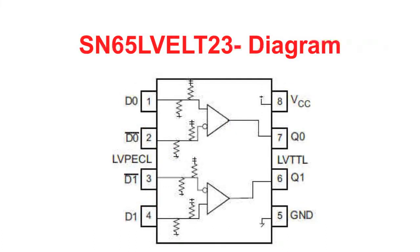The second device is the SN65ELT23, which is a low-power dual-channel 3.3-volt LVPECL to LVTTL buffer translator. This device has an internal input pull-up and pull-down resistor and built-in temperature compensation, and is ideal for use in system clock distribution as well as interfacing between FPGAs and ASSP devices.